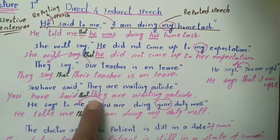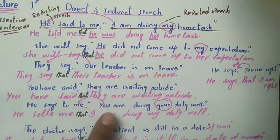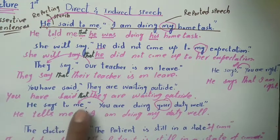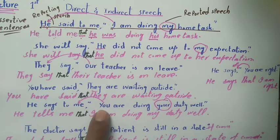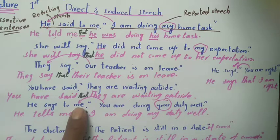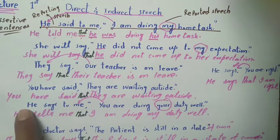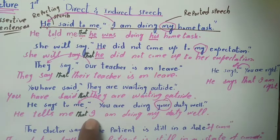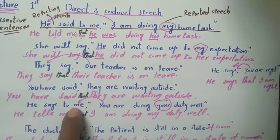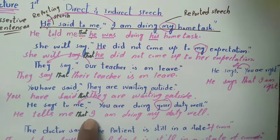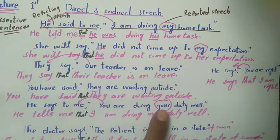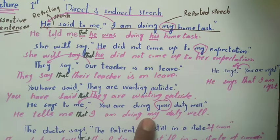Next: 'He says to me, you are doing your duty well.' Change 'says to me' to 'tells me'. Since the reporting speech is present tense, no tense change needed. The reported speech subject 'you' is second person, so we change it: the subject becomes 'I' and the object 'me' also changes. The possessive 'your' changes to 'my'. The indirect sentence is: 'He tells me that I am doing my duty well.'